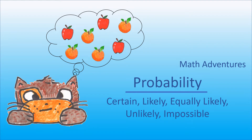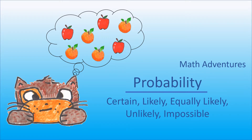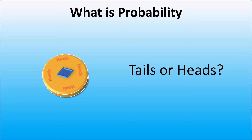Welcome to Math Adventures. Today we will be talking about probability. Probability describes the chance of an event happening. For example, a coin landing on tails.